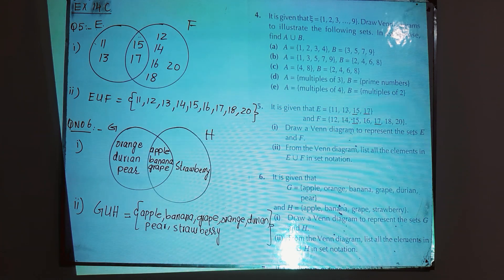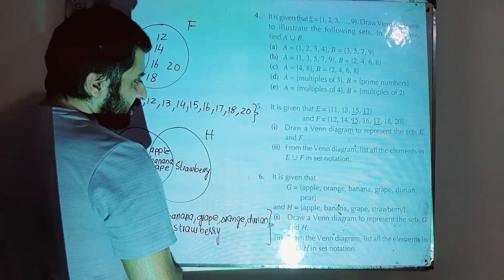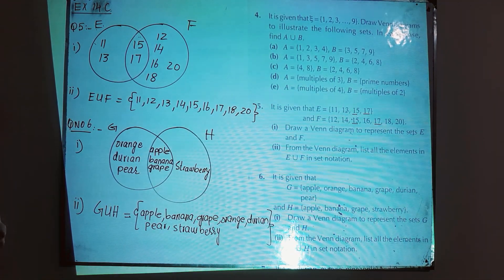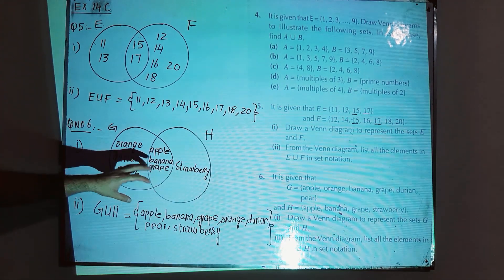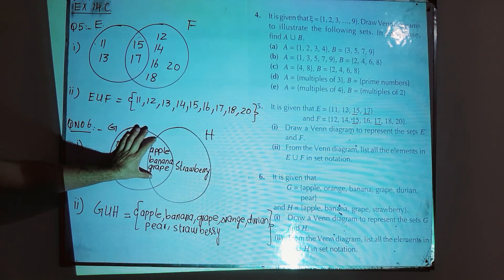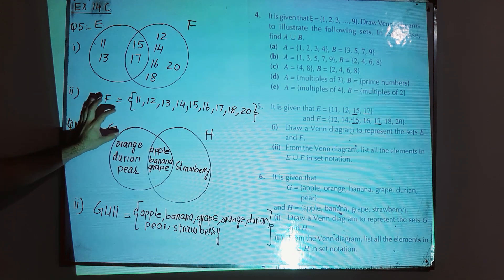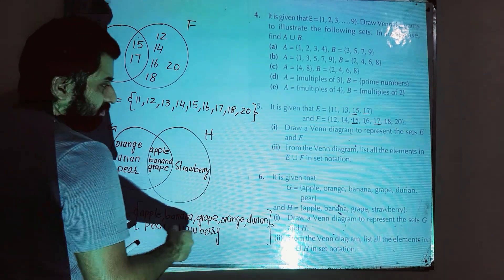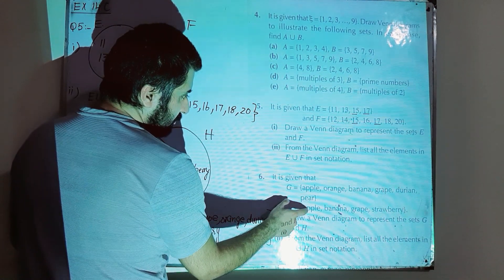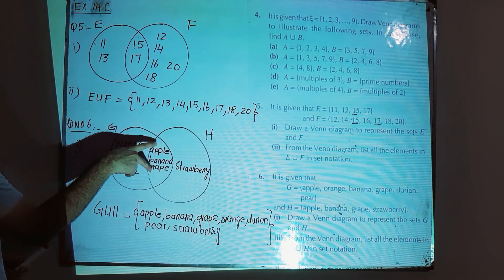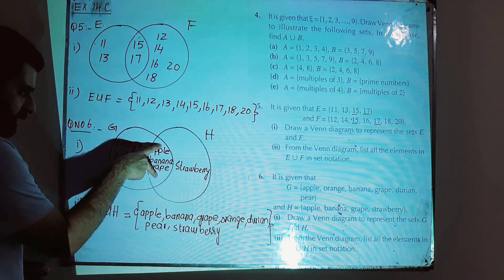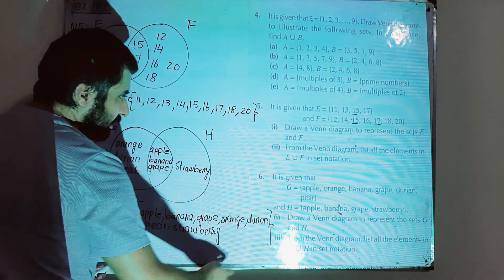Question number 6: set G has the fruits apple, orange, banana, grape, durian, and pear, while set H has apple, banana, grape, and strawberry. To draw the Venn diagram, draw two circles with an overlapping section for elements in both sets. Apple, banana, and grape are in both sets, so they go in the overlapping section.